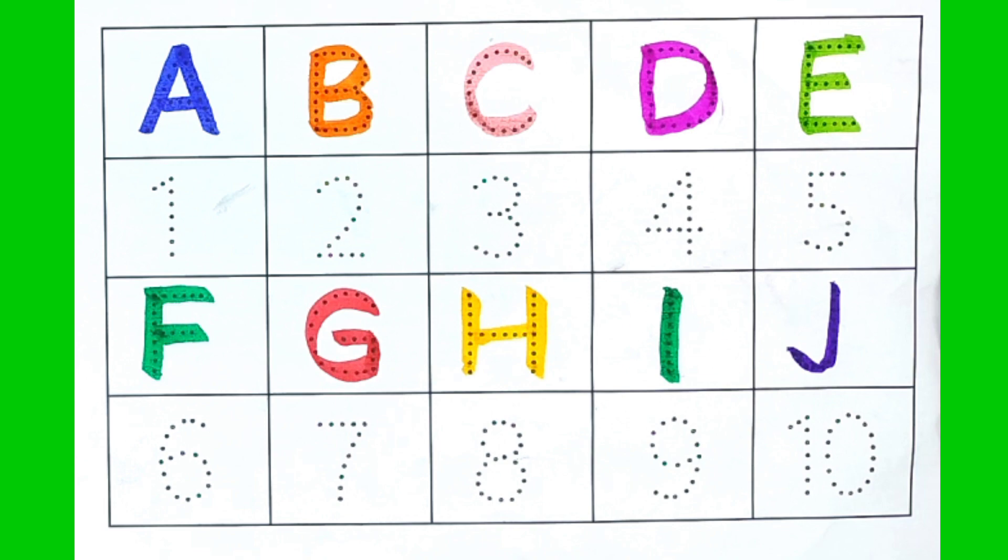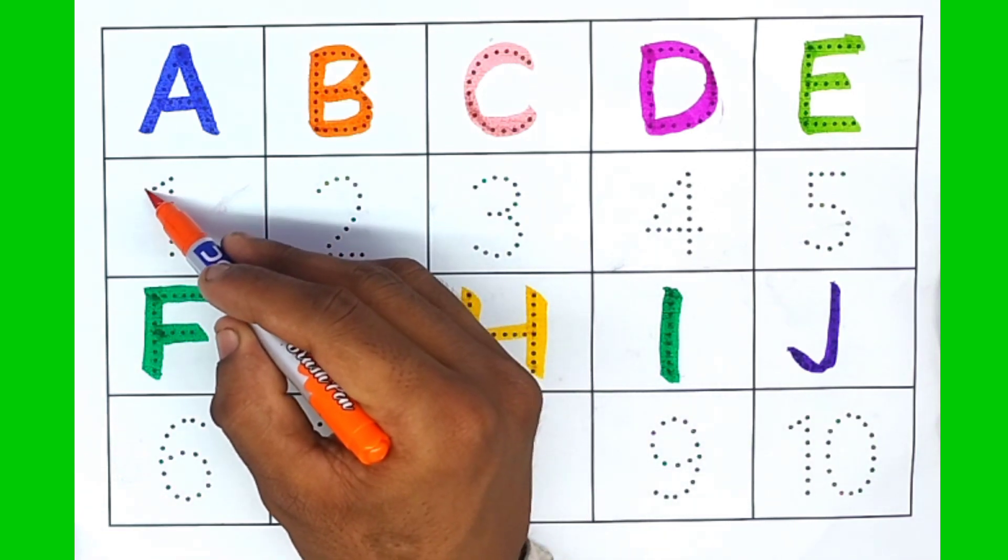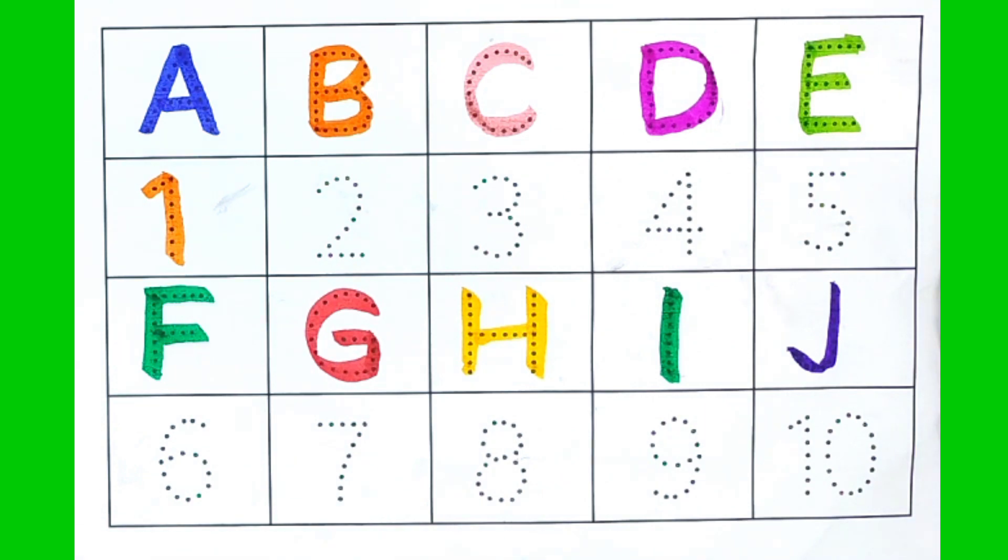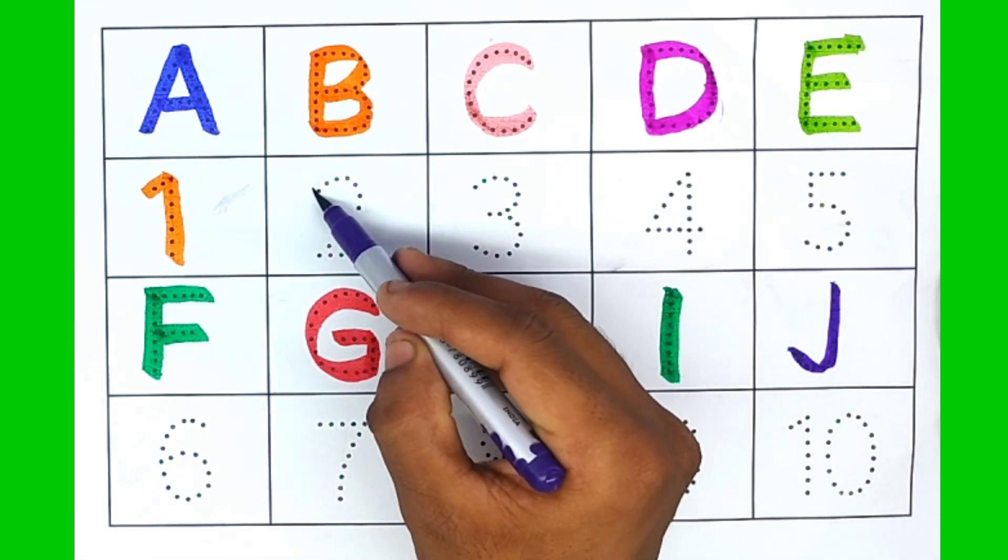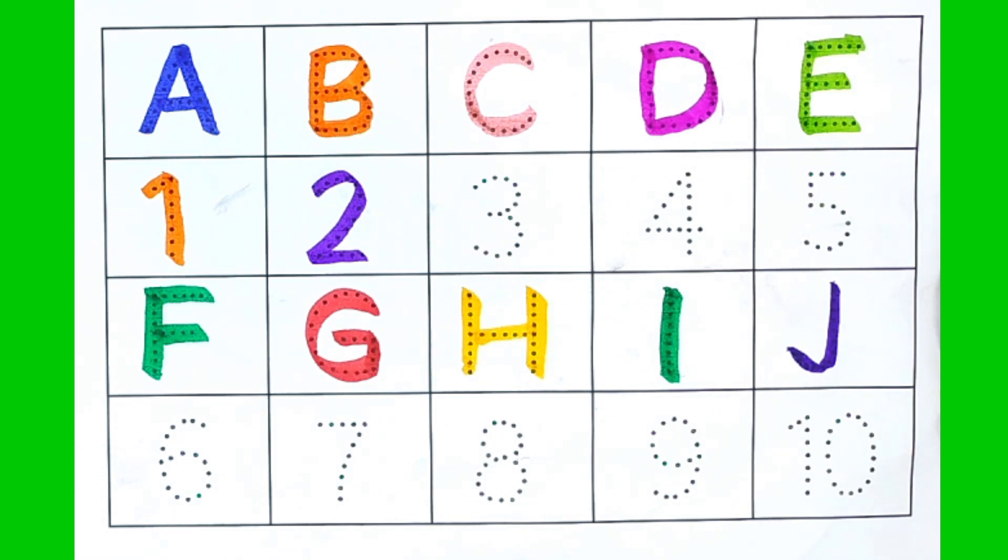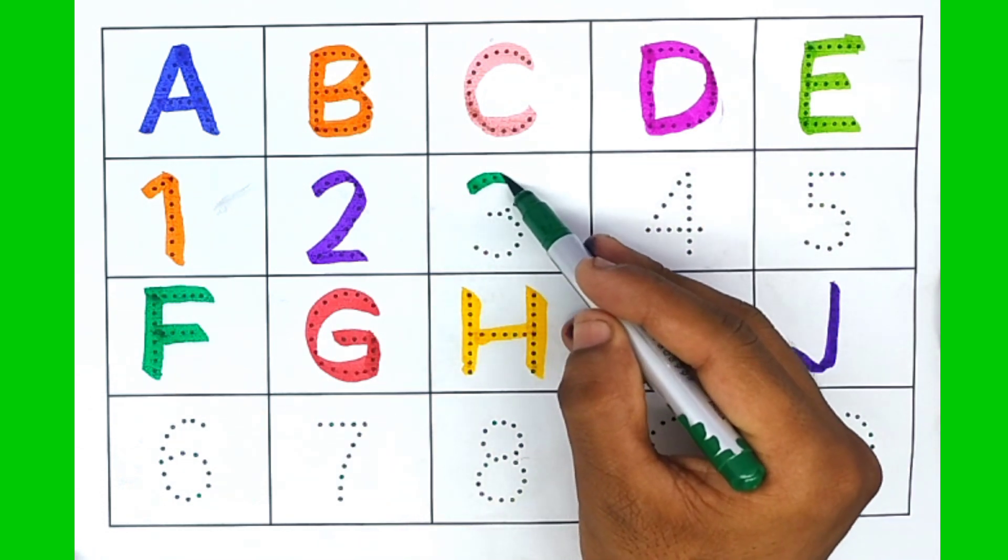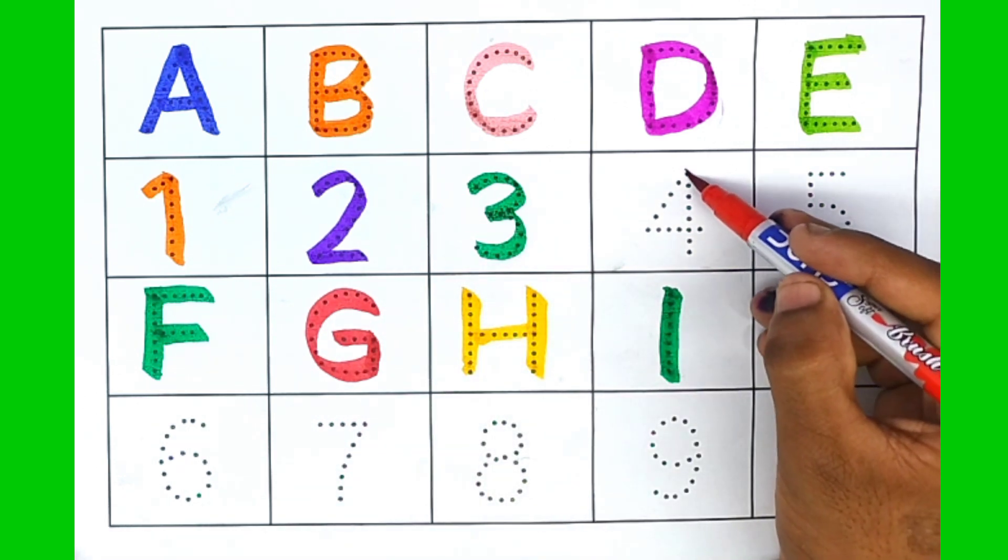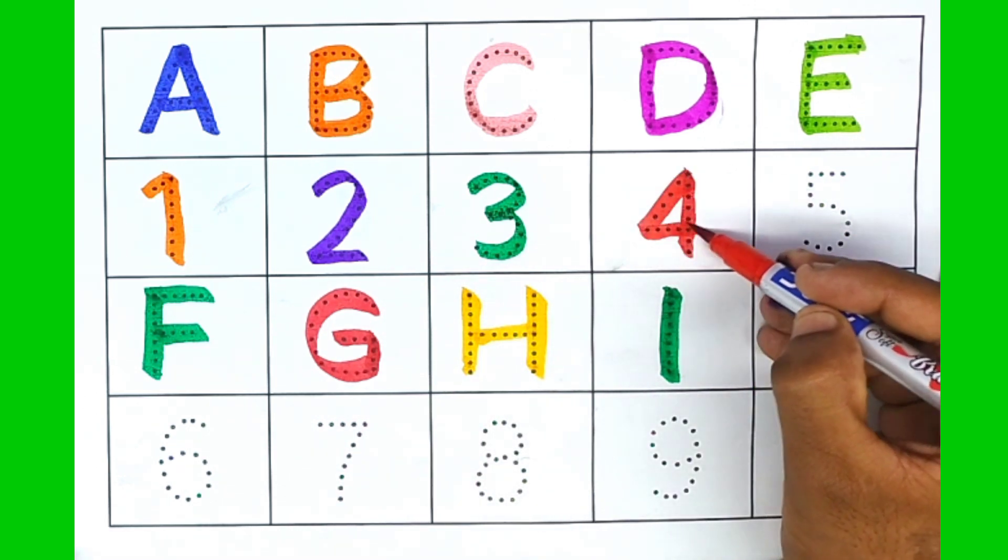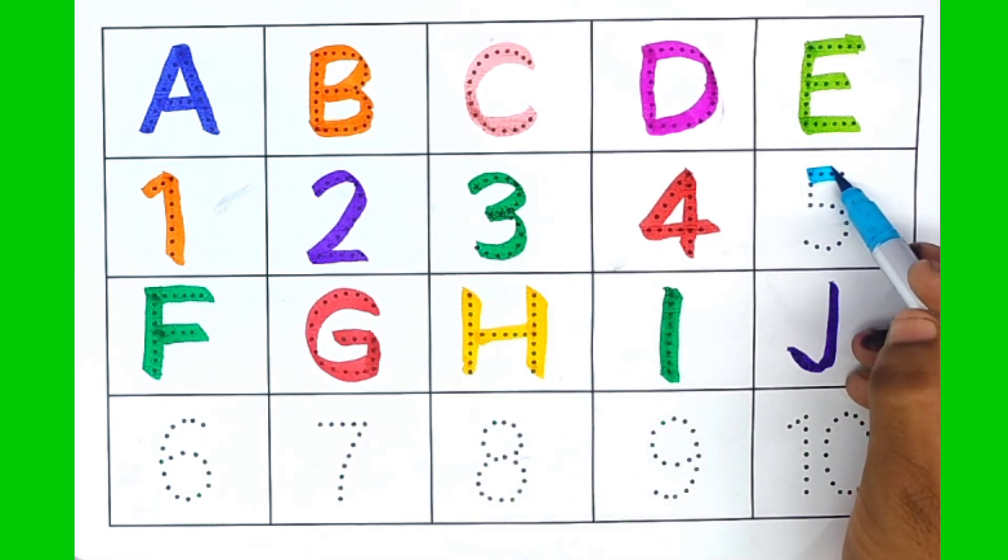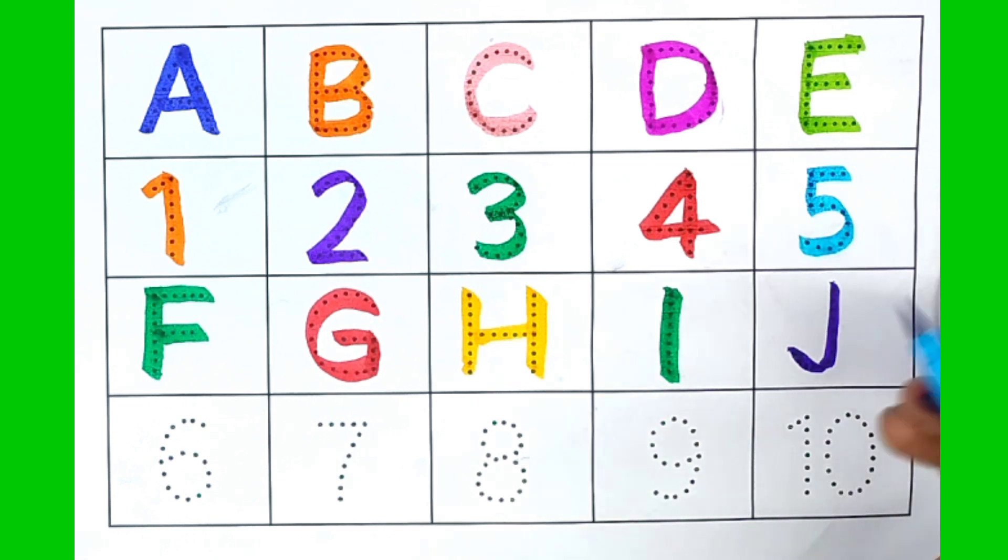Counting number. Look and follow my coloring. Orange color, number 1. Purple color, number 2. Green color, number 3. Red color, number 4. Sky blue color, number 5.